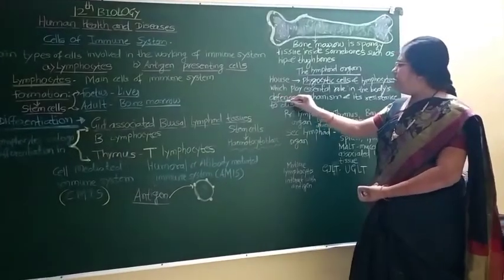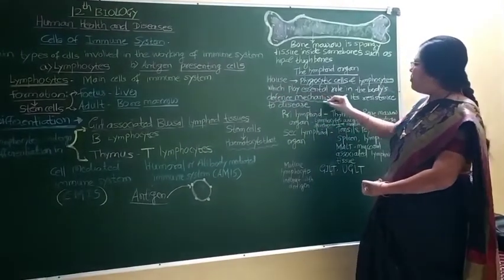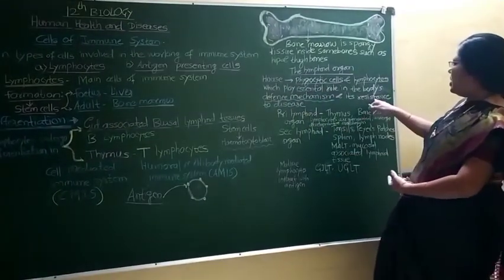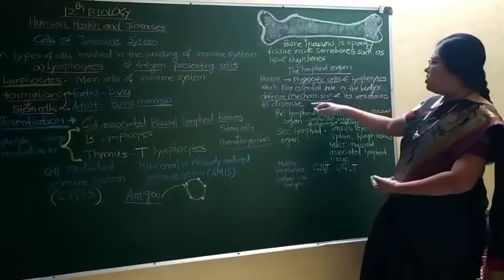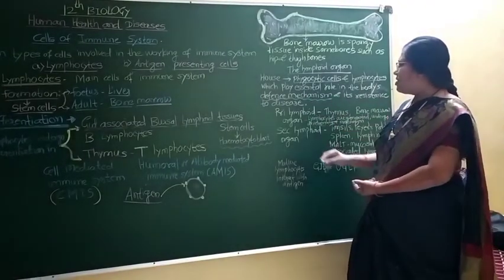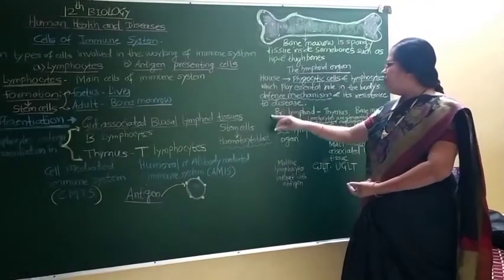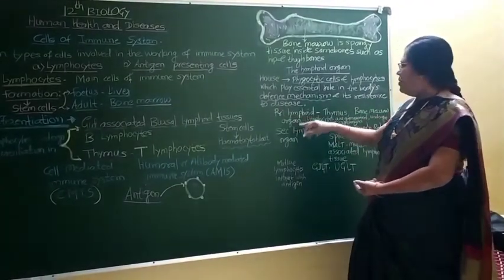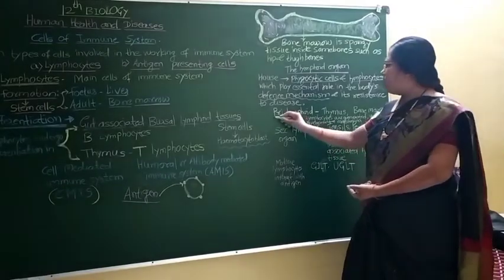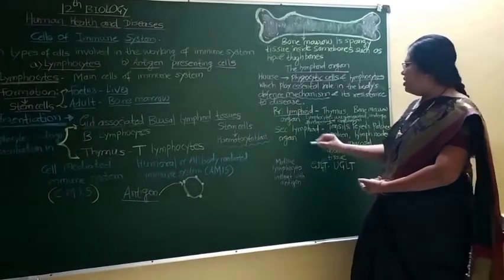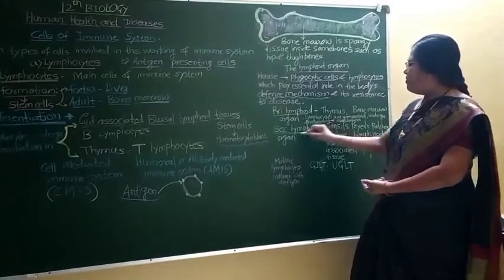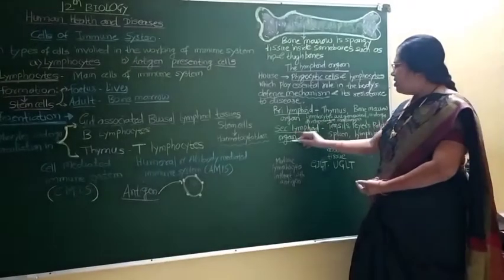Lymphoid organs play an essential role in the body's defense mechanism and its resistance to diseases. There are two types of lymphoid organs: number one, primary lymphoid organs, and number two, secondary lymphoid organs.